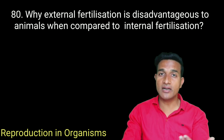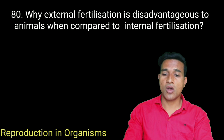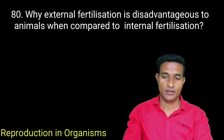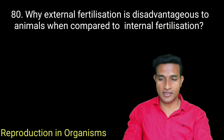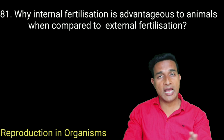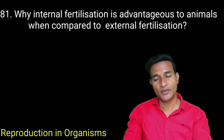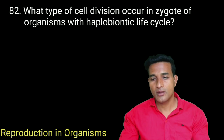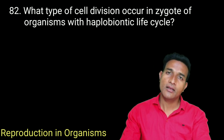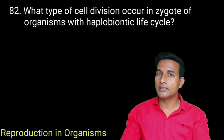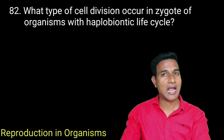Why is external fertilization disadvantageous to animals compared to internal fertilization? Because offspring are extremely vulnerable to predators, threatening their survival up to adulthood. Why is internal fertilization advantageous? Because offspring in internal fertilization are not vulnerable to predators, and fertilization takes place inside the body, providing better protection.